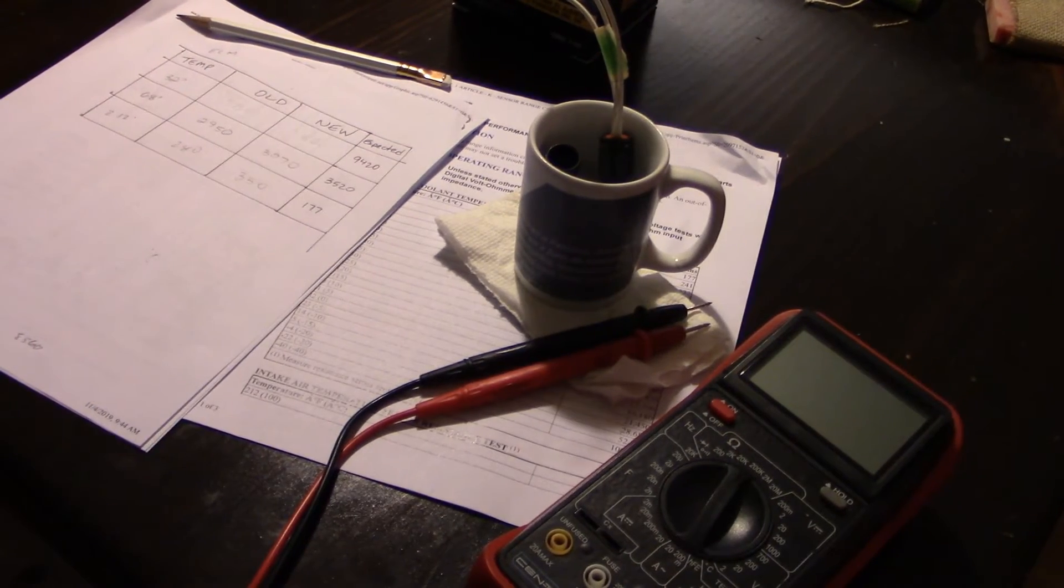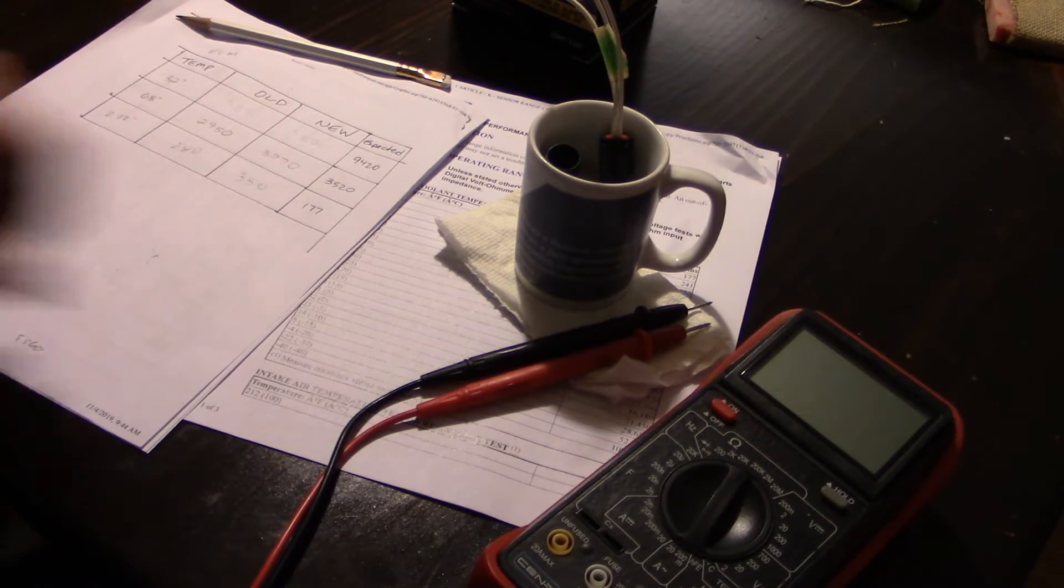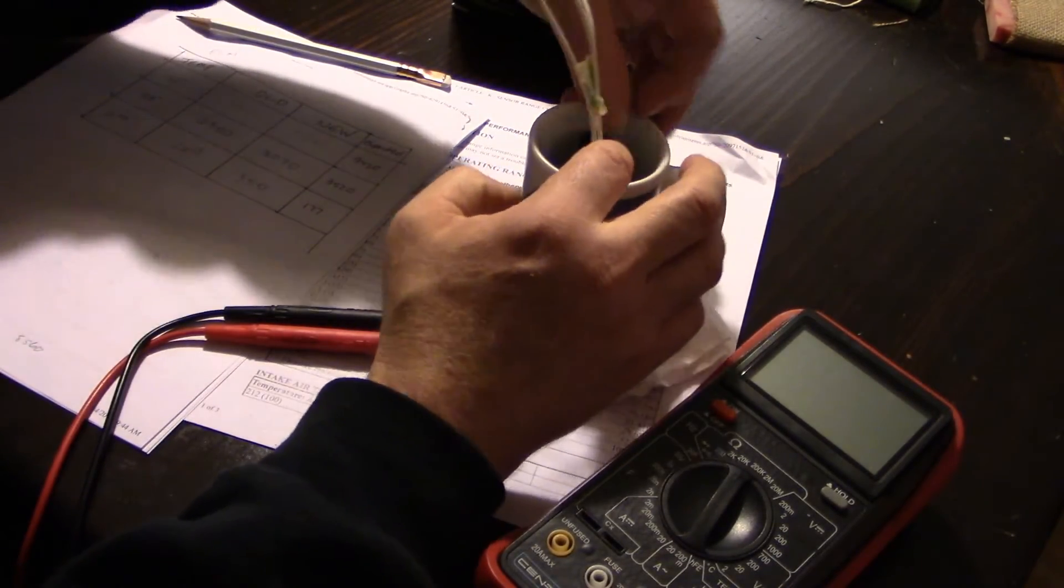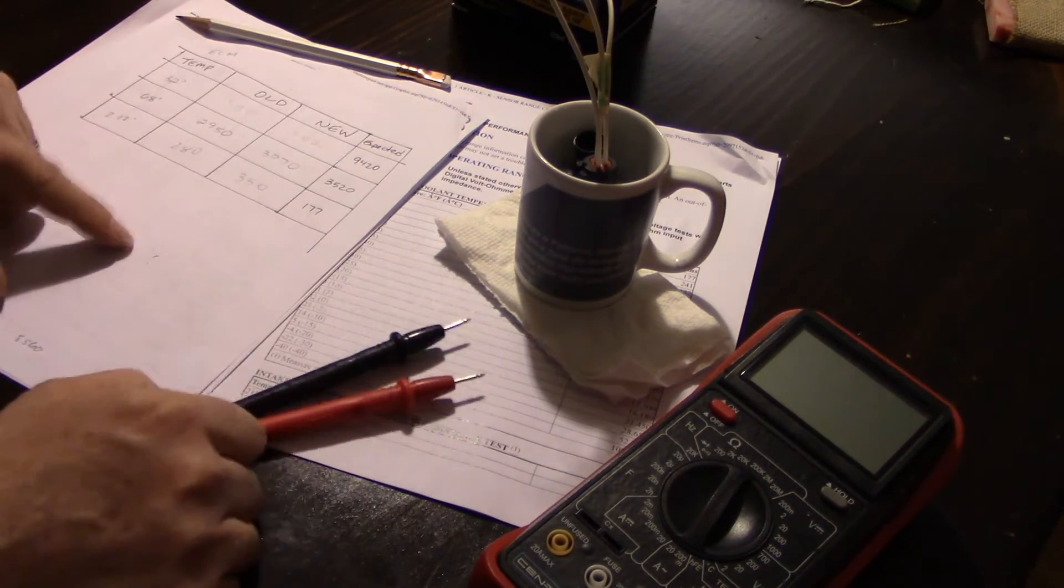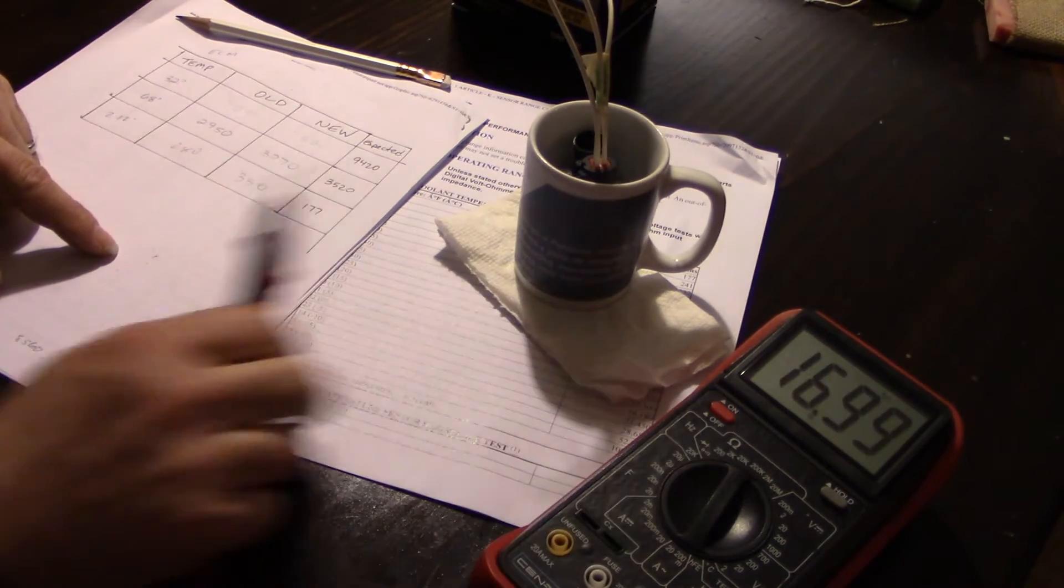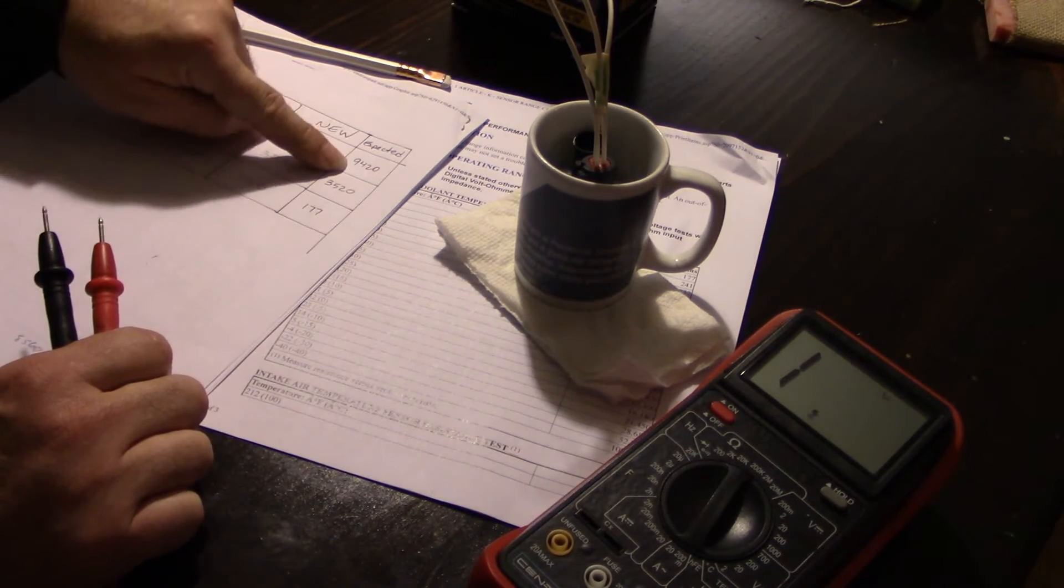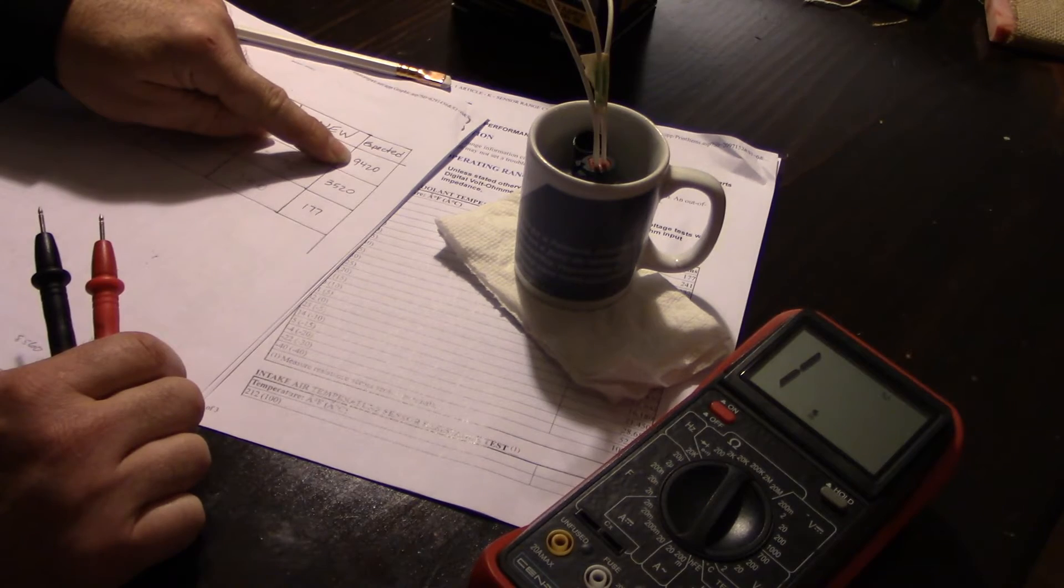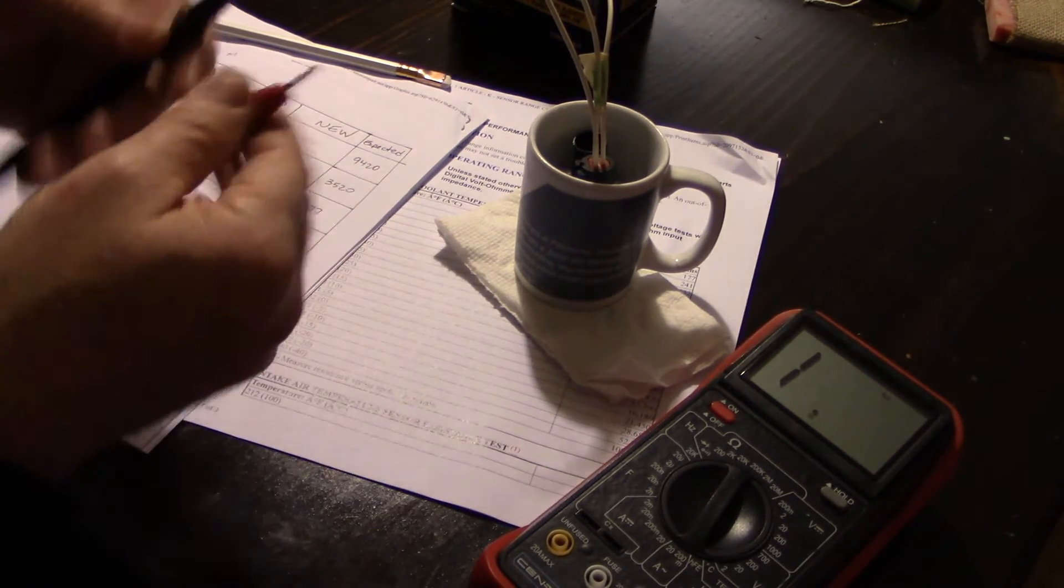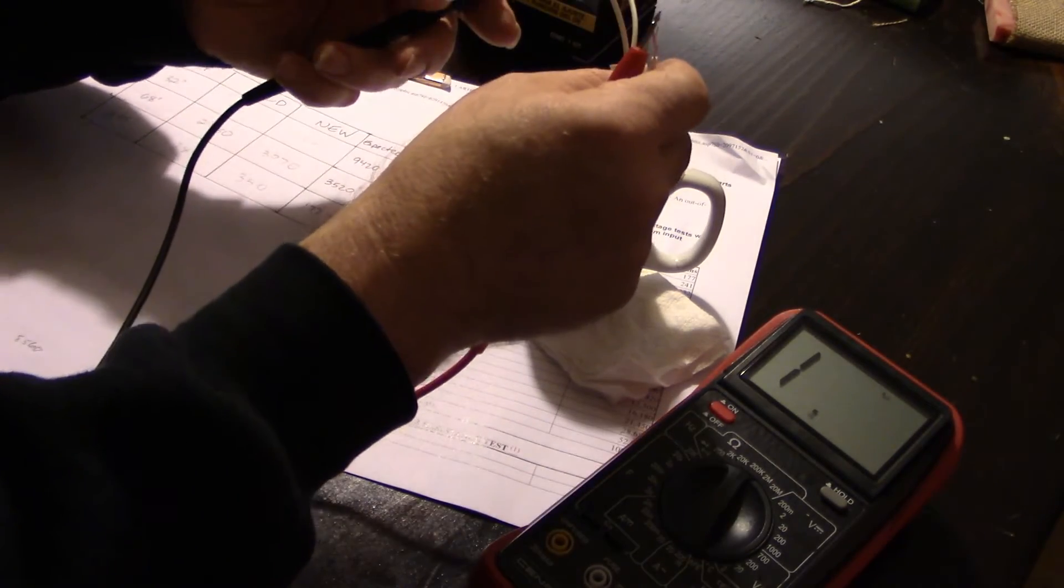All right, so I got the old and new coolant temperature sensors here in ice water where they've been for a while. So we're going to take a look at the resistance readings on those at 32 degrees. Now the expected reading would be 9,420 ohms of resistance according to the charts from GM. So let's give it a shot.